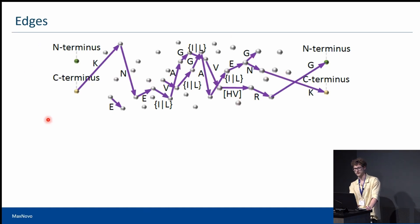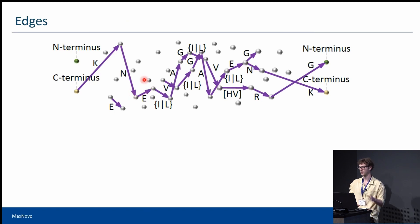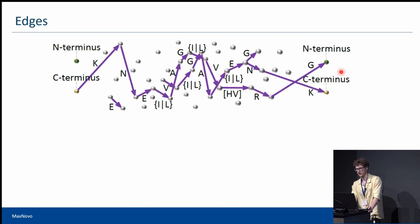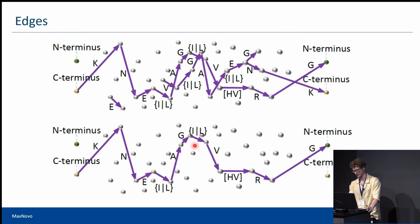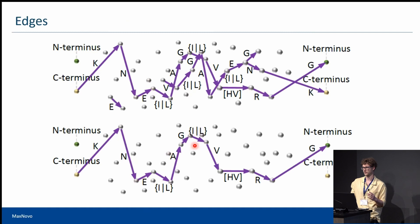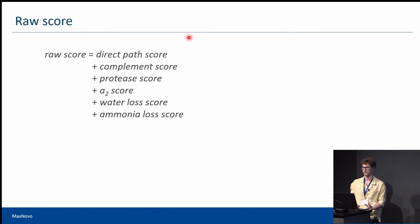During the recursive search, MaxNova constructs all possible edges between all nodes, resulting in multiple complete and incomplete sequences. From all of those, we then select the best sequence using a scoring algorithm. To understand how the scoring is done, we first go through all the components of the raw score, the first of which is the direct path score.